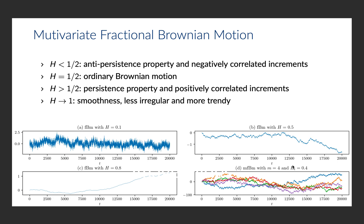An upward jump is more likely followed by another upward jump, or vice versa. For h going to 1, the process becomes smoother, less irregular and more trendy, as shown bottom left in the figure. The figure bottom right shows a multivariate FBM with m equal to 4.